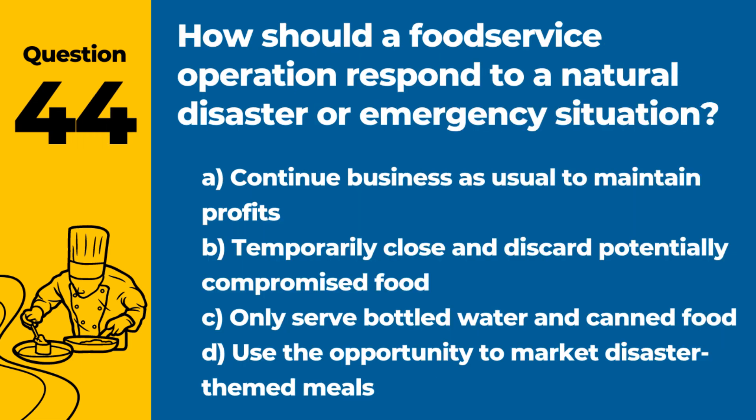Question 44. How should a food service operation respond to a natural disaster or emergency situation? Answer: B. Temporarily close and discard potentially compromised food. Safety should be the priority, with actions taken to prevent foodborne illness during and after emergencies.